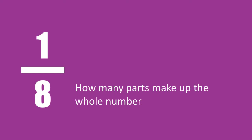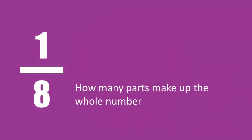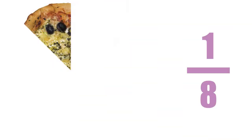The number on the bottom shows how many parts make up that whole number. For example, if you divided your pizza into eight equal parts, then your fraction would have an eight on the bottom. The top number shows how many of those parts you have. So if you took one slice of the pizza, then your fraction would be written as one over eight.